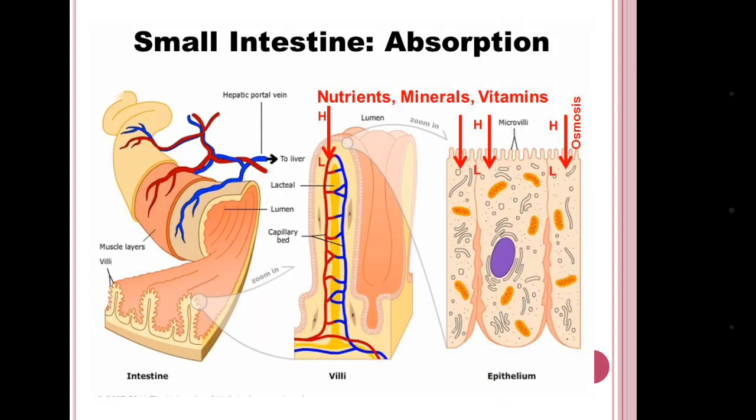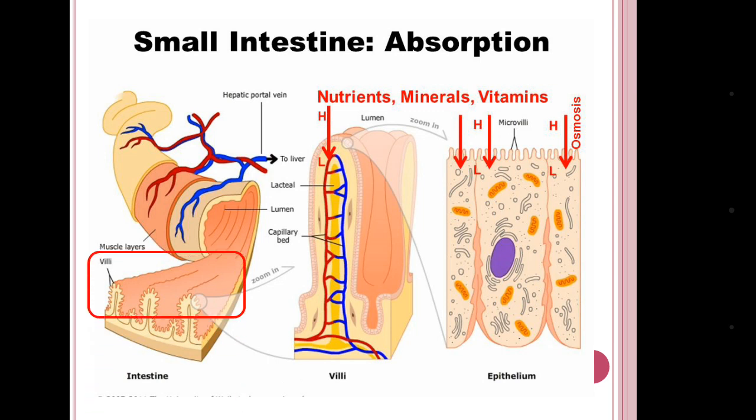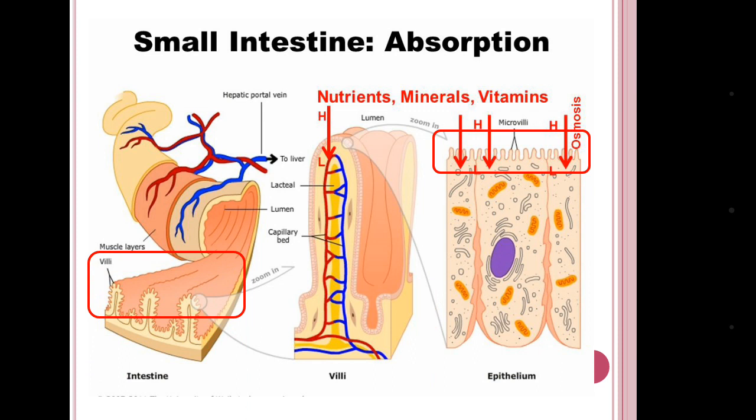Here we can see the small intestine of animals. We have villi — the folded regions in our small intestine. In this region, the microvilli absorb nutrients, minerals, and vitamins by the osmosis process.